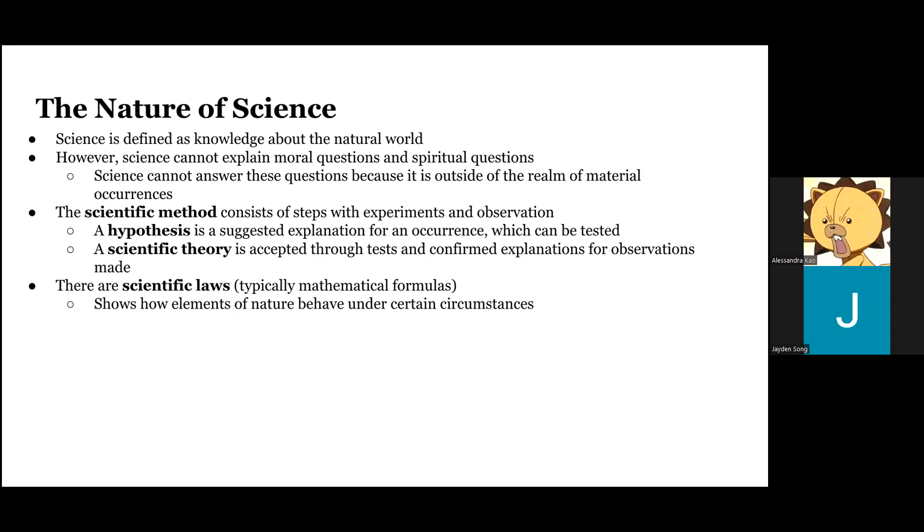The scientific method consists of steps with experiments and observation. A hypothesis is a suggested explanation for an occurrence which can be tested. A scientific theory is accepted through tests and confirmed explanations for observations made. There are scientific laws, which are typically mathematical formulas. They show how elements of nature behave under certain circumstances.